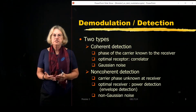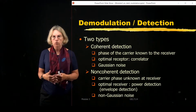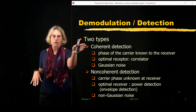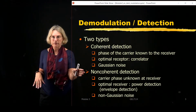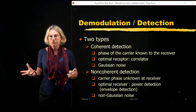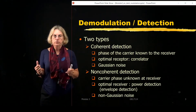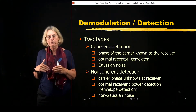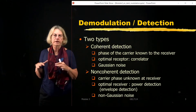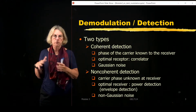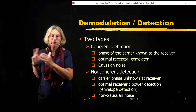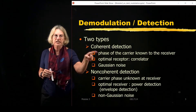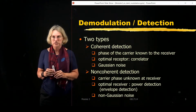There are two types of detectors we'll be examining. The classification goes between coherent detection and non-coherent detection. The vocabulary in the literature can vary a little bit from textbook to textbook and from paper to paper. When I talk about coherent detection, what I mean is that the phase of the carrier is known to the receiver.